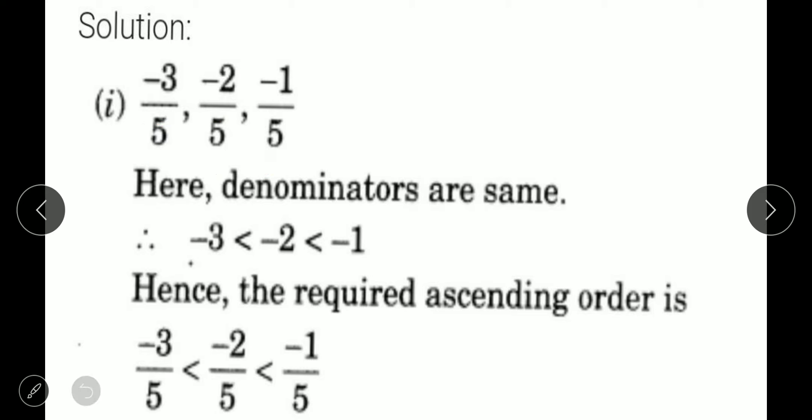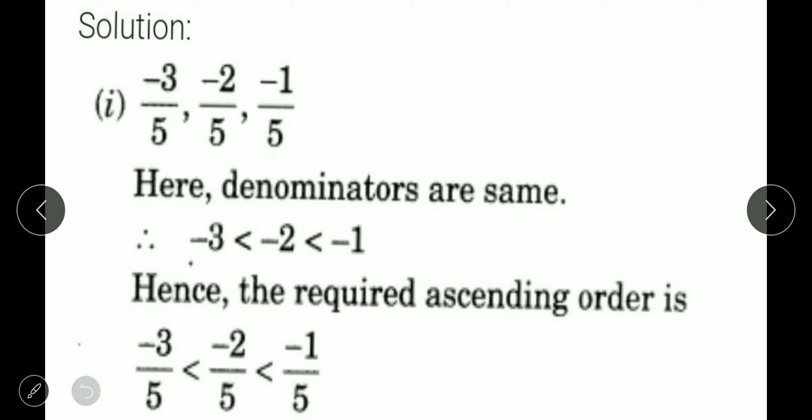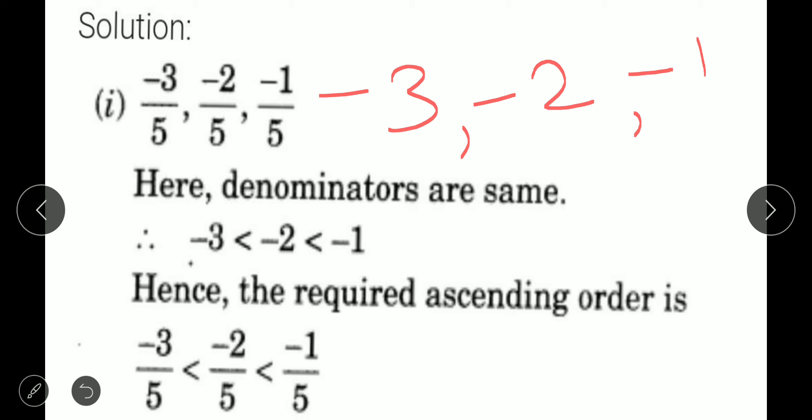When all the denominators are equal, there is no need to make the denominators the same — they already are. So we find from the numerators which one is greater and which one is smaller. The numerators are minus 3, minus 2, and minus 1.